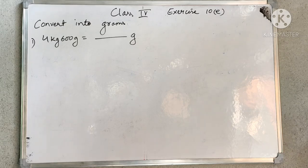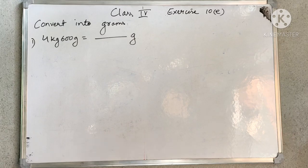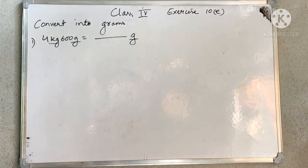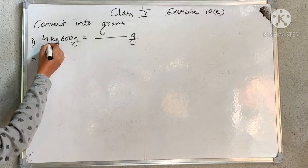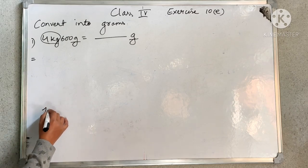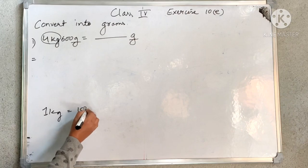You always need to check whether you are converting big to small or small to big. In this case, it says convert into grams. So what you are changing? You are changing kilogram and gram everything into grams. You only need to change the kilogram part. The gram part you will be adding. So for changing kilogram to gram — in 1 kg how many grams are there? 1000 grams.